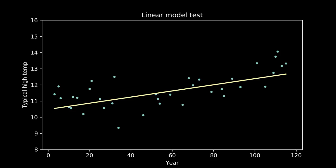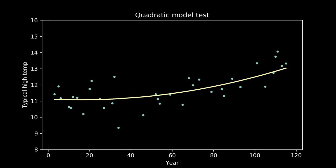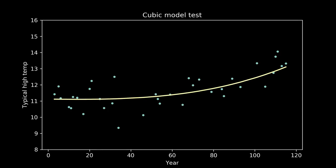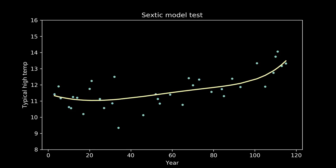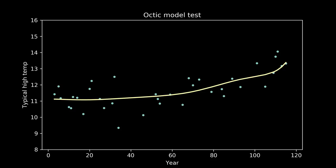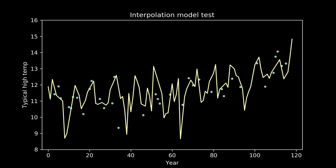Then we can go back to our collection of model candidates and try them one by one. Here are a few of the models trained on the training data and plotted against the testing data. As the models get to be higher order, we can see that the wiggles they developed may have been helpful for fitting the training data, but don't necessarily help them fit the testing data better. We can see an extreme example of this in the full interpolation model, where we just connect all the training data points with straight lines. It really struggles to match the testing data points.